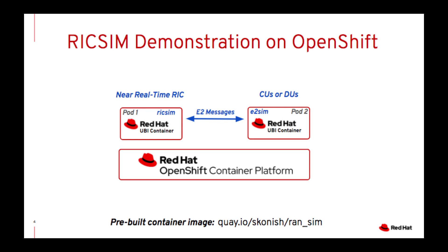For the demo, we've packaged this up into a pre-built container image available on Quay.io. We're going to run it as two separate pods. The first one acts as a server — the one on the right — which is the E2 sim. We're going to connect to that server using the RIC sim in a separate pod. Both of these are going to be running on the Red Hat Universal Base Image container running on OpenShift Container Platform.